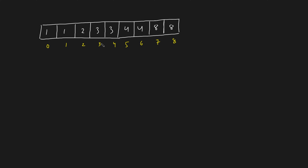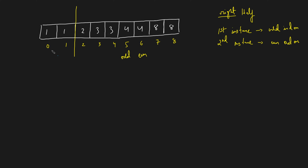You apply binary search to find the breakpoint — the point such that to the left all elements appear twice, and from the right the single element starts appearing. To find this breakpoint, observe the index pattern: on the left half, the first instance of any number appears at an even index and the second instance appears at an odd index. On the right half, this pattern flips — four's first instance is at an odd index and its second instance is at an even index.